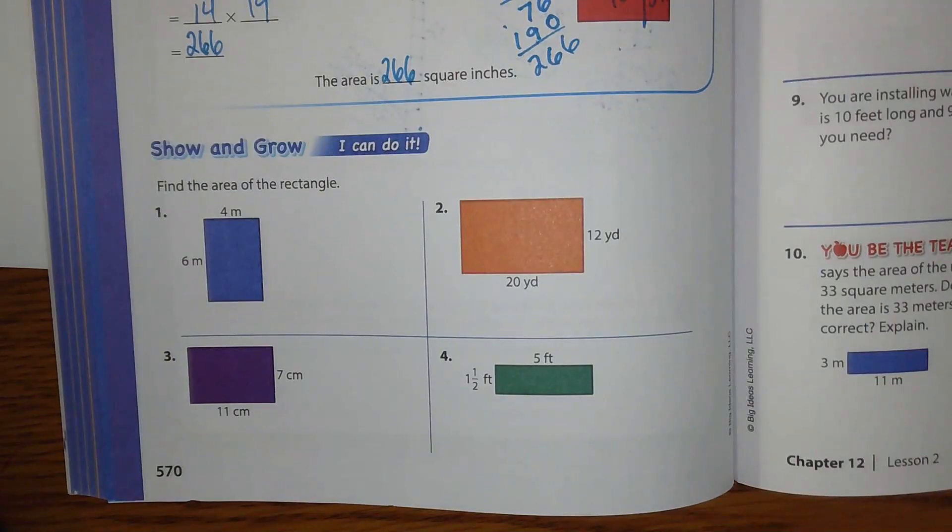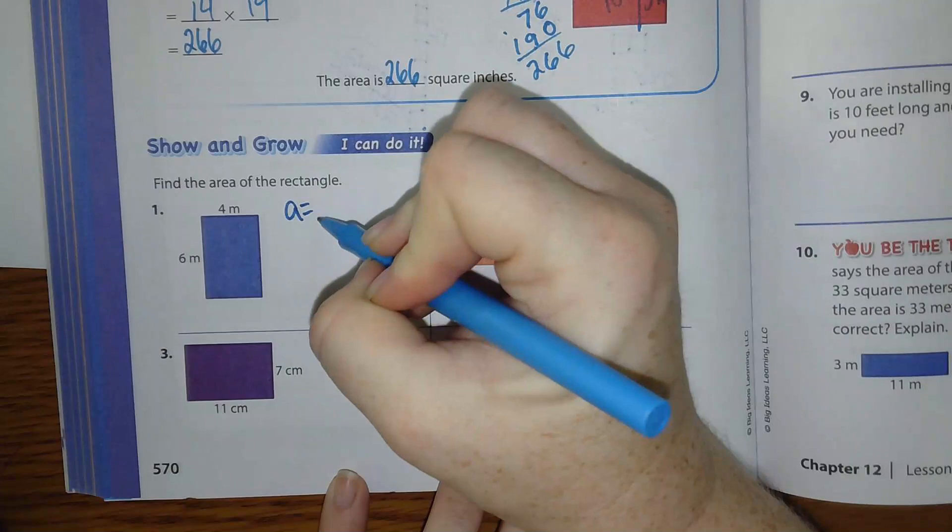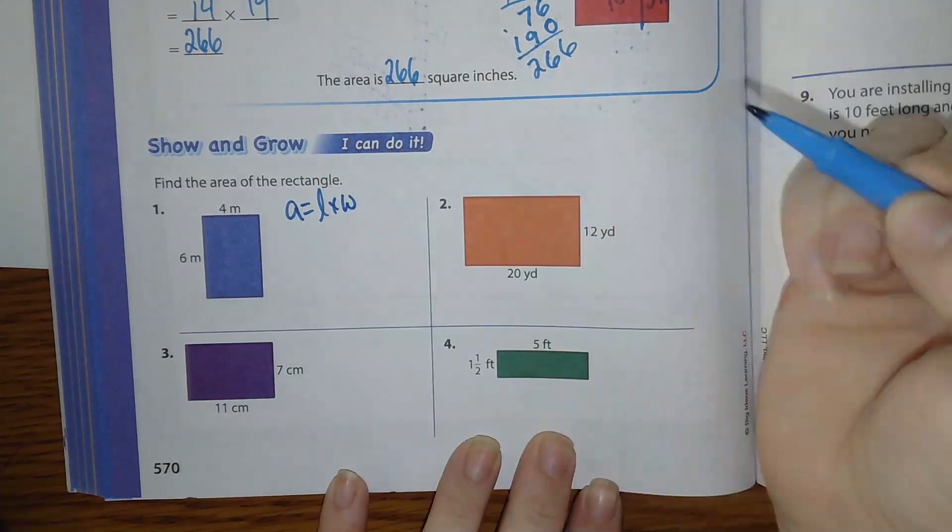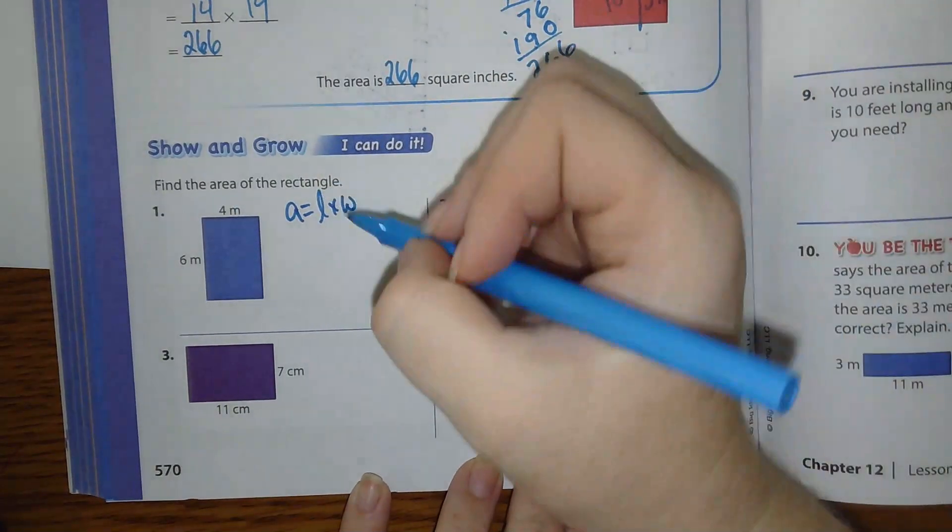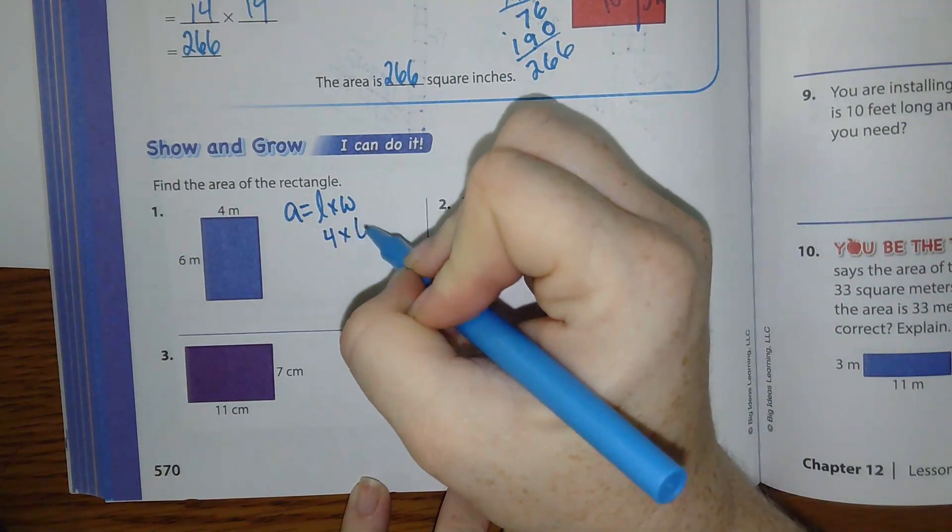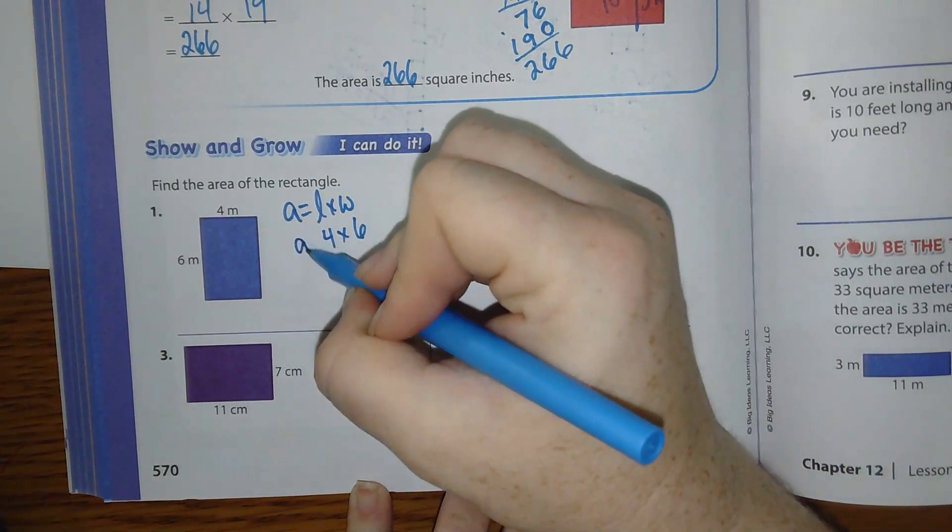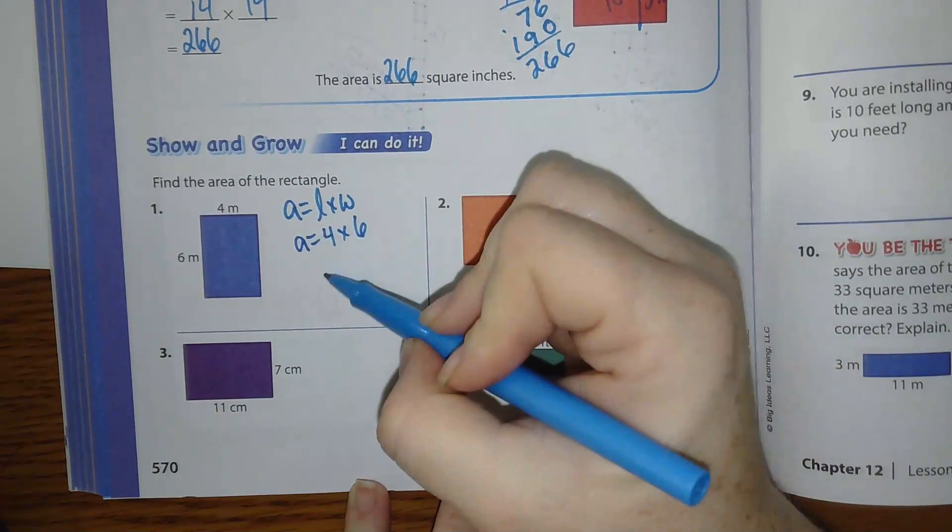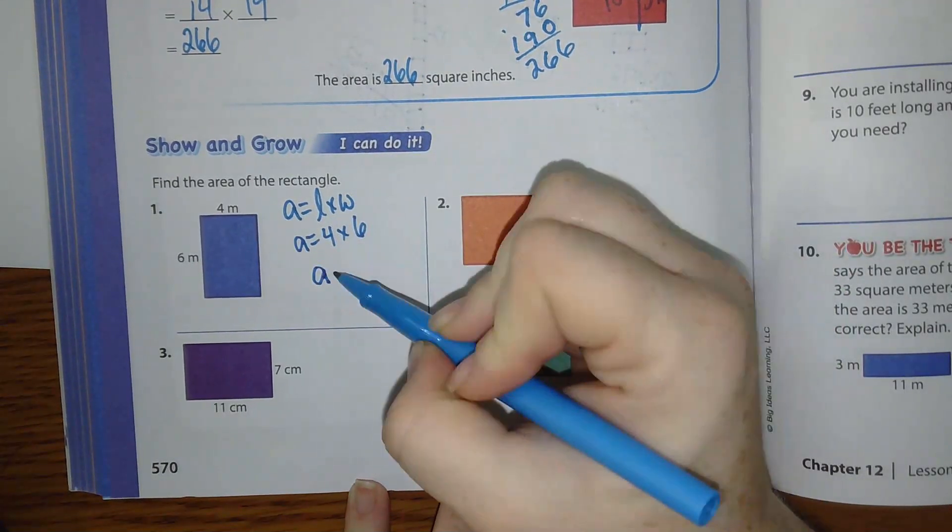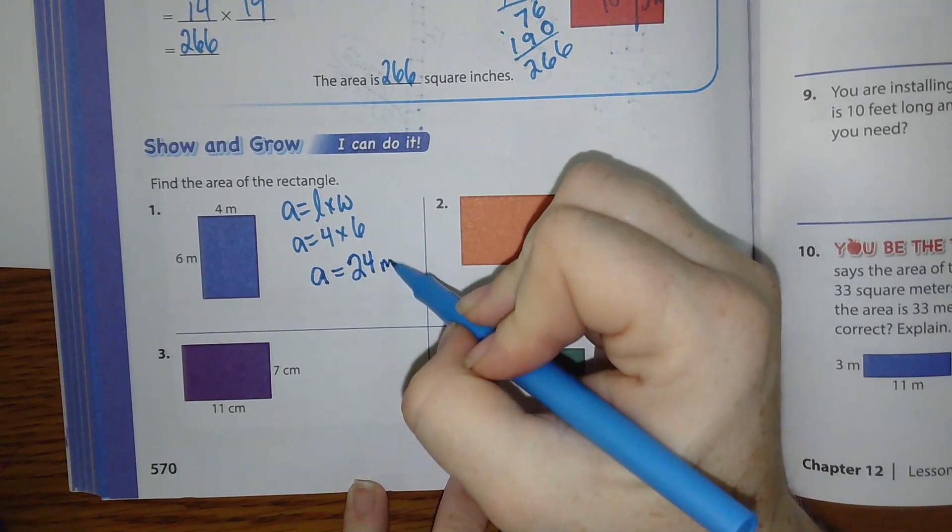So we'll zoom in a little bit and look at 1 through 4. So finding the area of the rectangle on number 1. So what I want you to write there is area equals length times width. And we know that the length is 4. The area is 6. I'm sorry. The length is 4. The width is 6. So area equals 4 times 6.